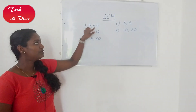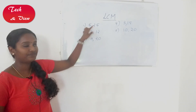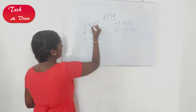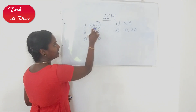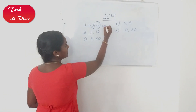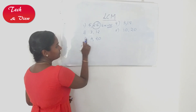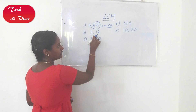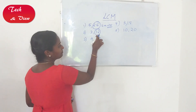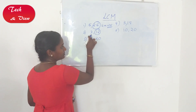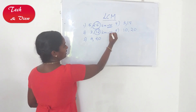First example: 5 and 25. The greatest number is 25. 25 divided by 5 is 5 — fully divisible. So LCM is 25. Second example: 3 and 12. The greatest number is 12. 12 divided by 3 is 4 — fully divisible. So LCM is 12.